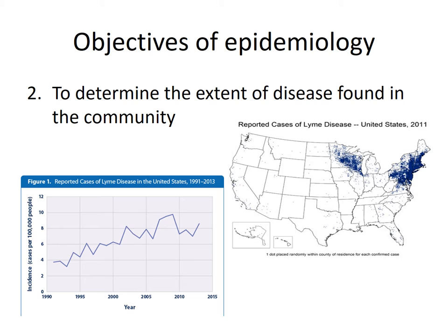The second objective of epidemiology is to determine the extent of disease found in the community. We're looking at two different things here. The first graph on the left looks at the amount of disease as it climbs over the years — this is Lyme disease, which has grown over the years. The second figure on the right shows the reported cases of Lyme disease by location and how far it has spread. When we look at the extent of disease, we could be talking about either of these factors.